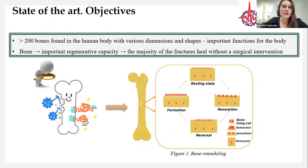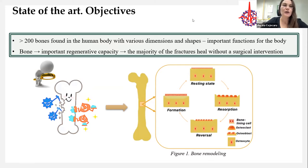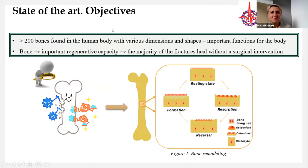In the human body there are more than 200 bones with various dimensions and shapes, providing very important functions such as movement and locomotion, protection of some vital organs, microenvironments for adult hematopoiesis, and storage of minerals and regulation of hormones. Moreover, bone has an amazing feature unique in the human body — its regenerative capacity — which allows it to heal without structural and functional impairment. This can be mainly attributed to the balance between osteoblast and osteoclast activity.